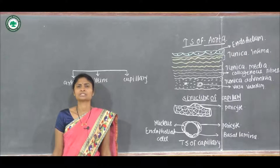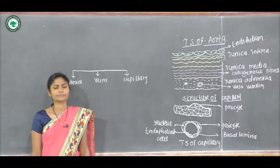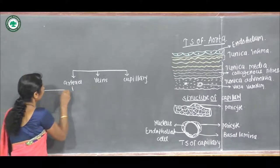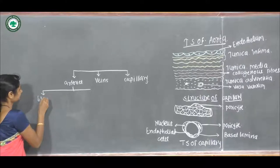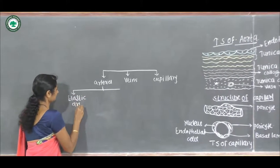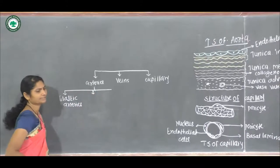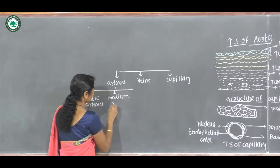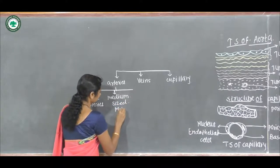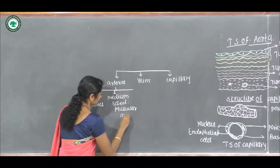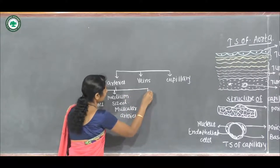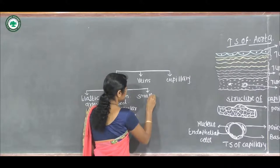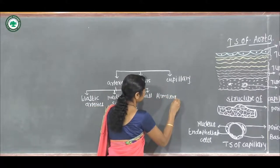Arteries are also called conducting arteries because they conduct blood from the heart to medium-sized arteries. Arteries are divided into three types: the first type is elastic arteries, the second type is medium-sized muscular arteries, and the third type is small terminal arteries or arterioles.